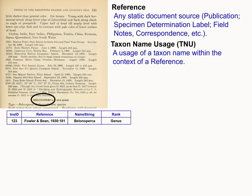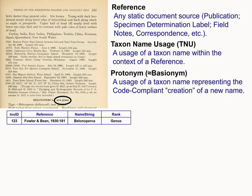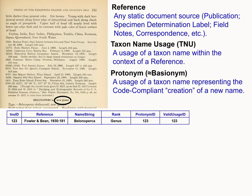A taxon name usage row would have a UUID identifier, a pointer to the publication and page number, the text string spelling, and the rank — in this case a genus. A special kind of TNU is the protonym, which is the first instance of a taxon name: the code-governed creation event. It's very analogous to a botanical basionym. In the protonym row, the protonym ID points back to itself. It also has a link saying it's valid — meaning this publication treated it as what a zoologist would call a valid taxon or what a botanist would call an accepted name, not a synonym.